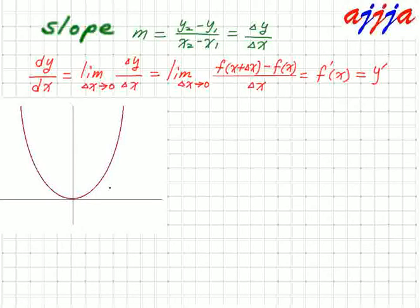So derivative is simply what? The slope of two points. But between those two points, actually too close apart. So actually both points are on one point.